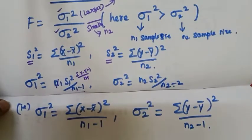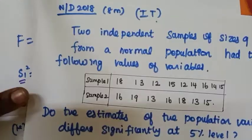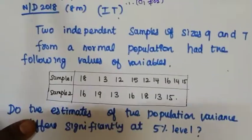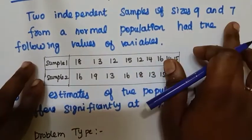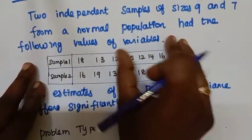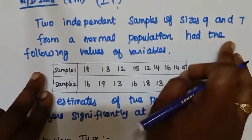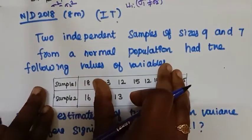Now let's see an example. Question: 2 independent samples of size 9 and 7 from the normal populations had the following values of variables.